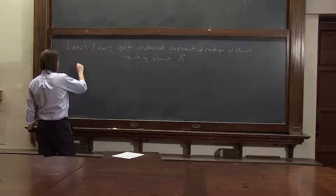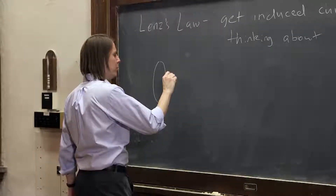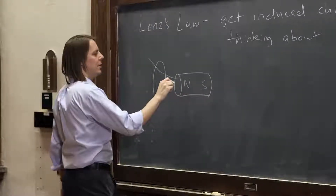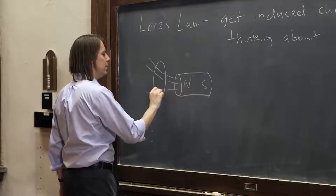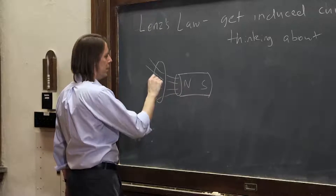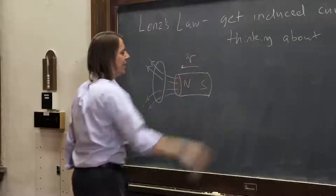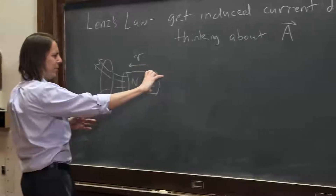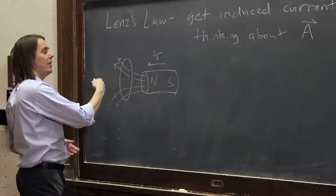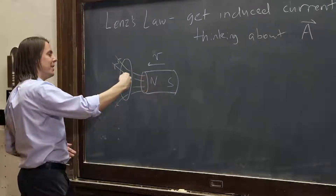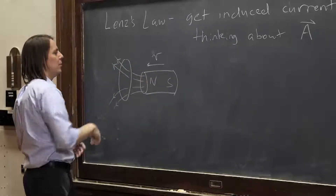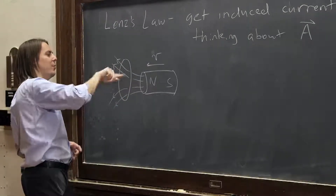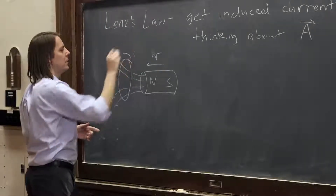Let's do a couple of the old cases that we already did. Here is a wire loop, and here is a bar magnet — north, south — with field lines going out like that, and the bar magnet moving toward the loop. The B field is this way and it's increasing because it's getting closer to the higher intensity region. The flux of the B field is going up, so Lenz's law says the induced current will make a B field in the opposite direction. You can quickly do a right-hand rule and say the current goes that way by Lenz's law.